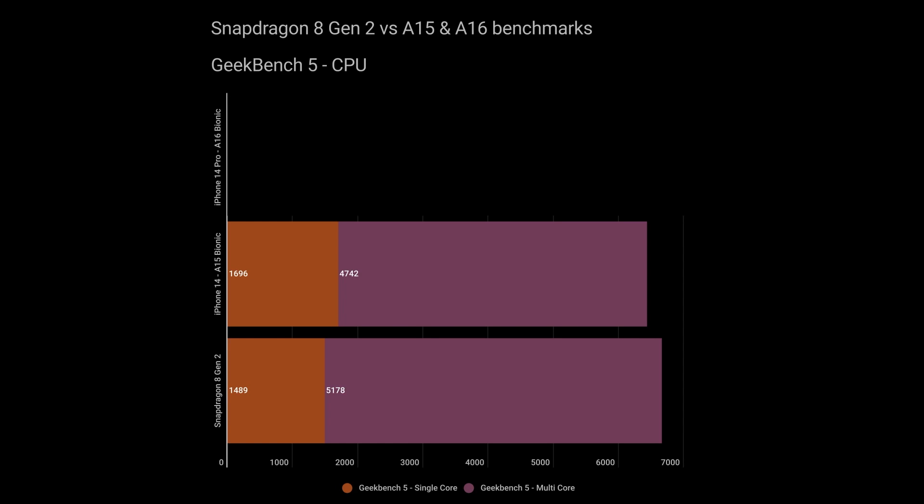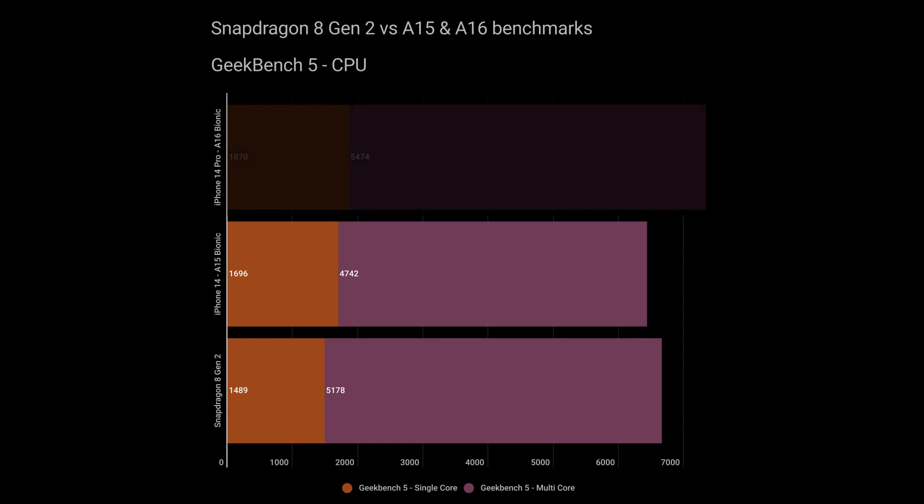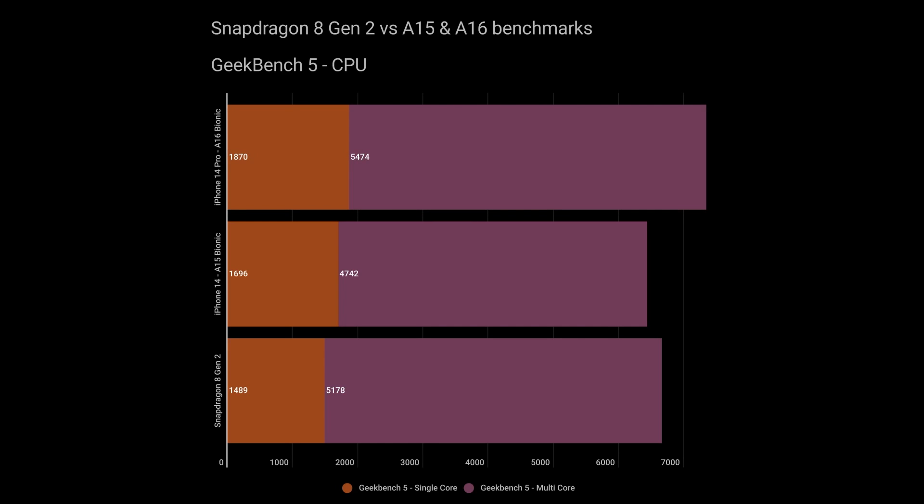Adding the A16 Bionic into the mix, its single-core score is 1,870 — much higher than the Snapdragon 8 Gen 2. In multi-core the A16 scores 5,474, which is better than the Snapdragon's 5,178, so the Snapdragon is catching up but the A16 is still clearly the winner.